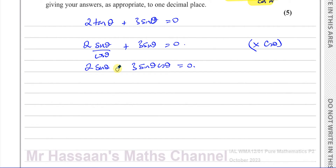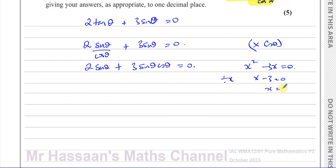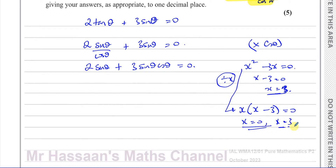A lot of students at this stage divide everything by sin(theta) — that's completely wrong. For example, with x² minus 3x equals zero, if you divide by x you get x equals three and lose the solution x equals zero. By dividing by a variable you lose solutions. You must always take the variable out as a common factor. You can divide by a constant, but never by a variable.